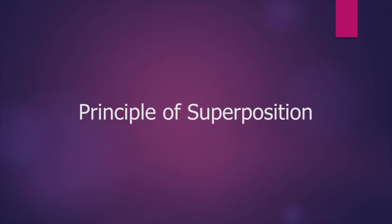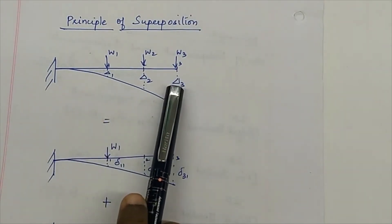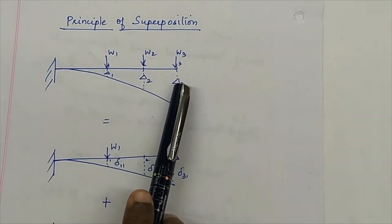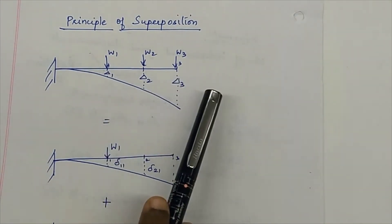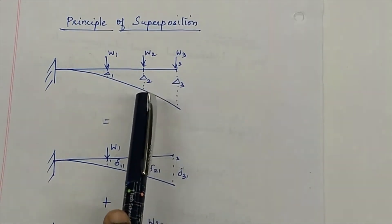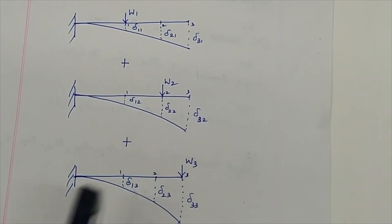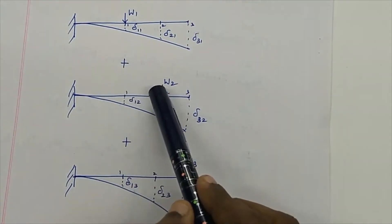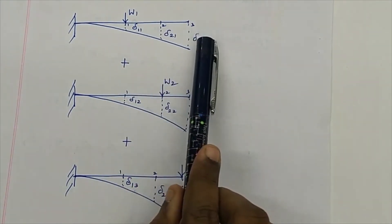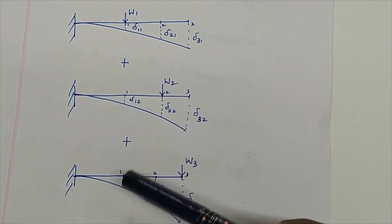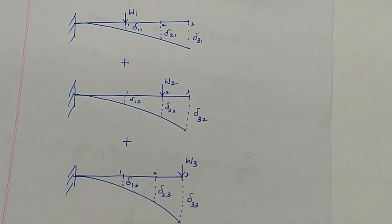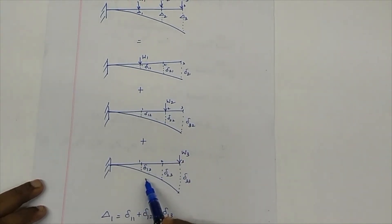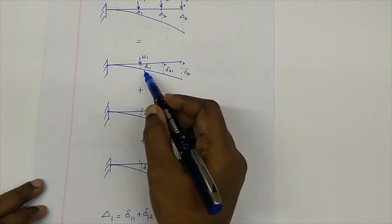Now we shall see the principle of superposition. Let us consider a set of loads acting on a cantilever beam. Delta 1, delta 2, delta 3 are the deflections under points 1, 2 and 3 when all the loads W1, W2 and W3 act on the beam together. This can be equated such that each load is applied on the beam at points 1, 2 and 3 one at a time, and the deflection due to each load is determined at all points. Delta 1 is determined as the summation of delta 1-1, delta 1-2 and delta 1-3, all at point 1 when each load is considered individually.